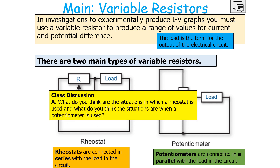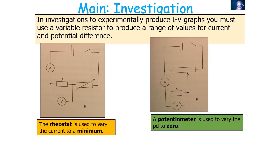In what situations is a rheostat used, and in what situations is a potentiometer used when you require a variable resistor? A rheostat is used to vary the current in the circuit to a minimum, whilst a potentiometer is used to vary the potential difference to zero in an electrical circuit.